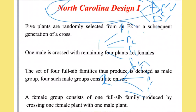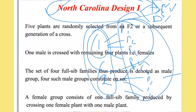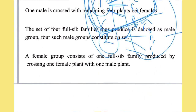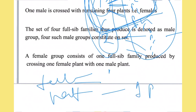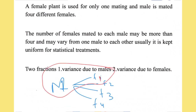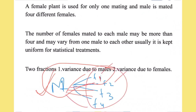The set of four sib families produced constitutes a male group. For example, male parent M1 is crossed with females P5, P6, P7, and P8 forming male group 1, while P1 to P8 constitute the female group. Full-sibs share both parents in common, while half-sibs share only one parent. A female parent is used for only one mating while the male is used for different matings with different females. The number of females mated to each male may be more than four but is kept uniform for statistical treatment.